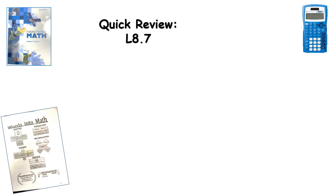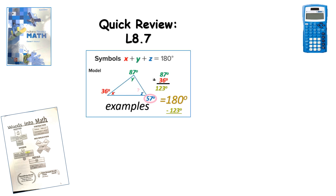It's time for finishing up chapter 8. Before we get into lesson 8.8, I want to do just a quick review of lesson 8.7, our previous lesson. It dealt all with triangles. We found out that the interior angles of any triangle, doesn't matter what type or size, when we add them all together, they equal 180 degrees. We saw how, in this example where we're missing angle Z, if I add the two given angles and subtract from 180, I can find the missing value.